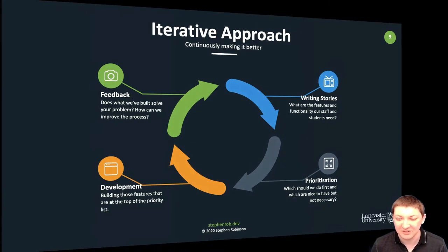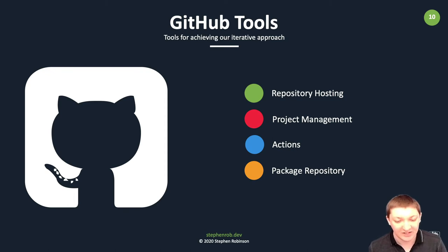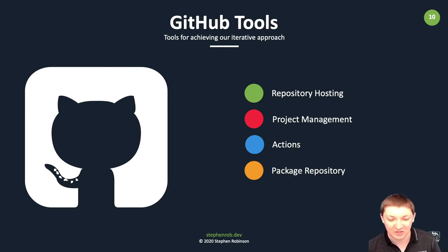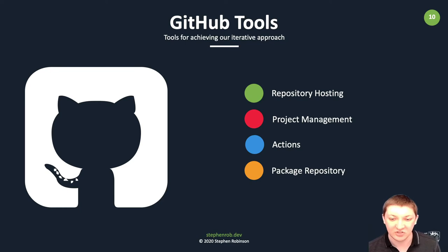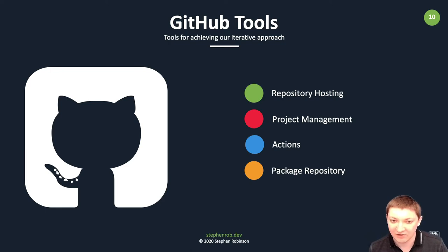To achieve this approach, after trying many tools including Azure DevOps, the Atlassian suite, and Jenkins, we've settled on GitHub as our platform for managing products and projects. This gives us repository hosting for all our code, as well as project management through GitHub Issues and pull requests. We use an extension called ZenHub, freely available to academic institutions. GitHub Actions and their package repository allow us to run test suites and deploy code, storing Docker images for our Kubernetes deployments, as well as Ruby gems and Node packages.